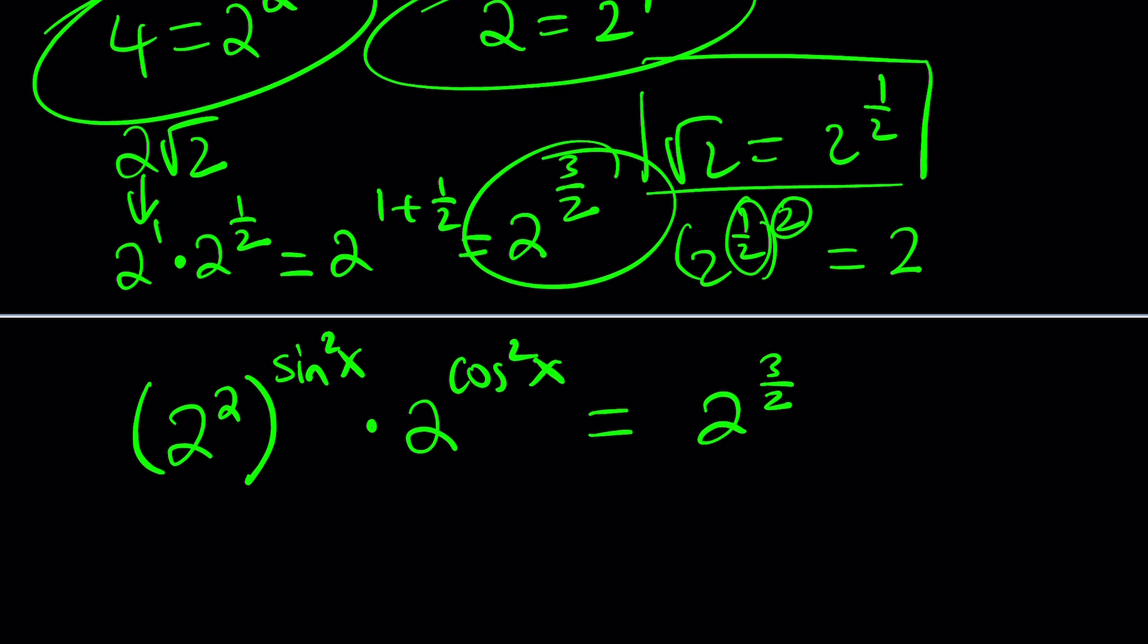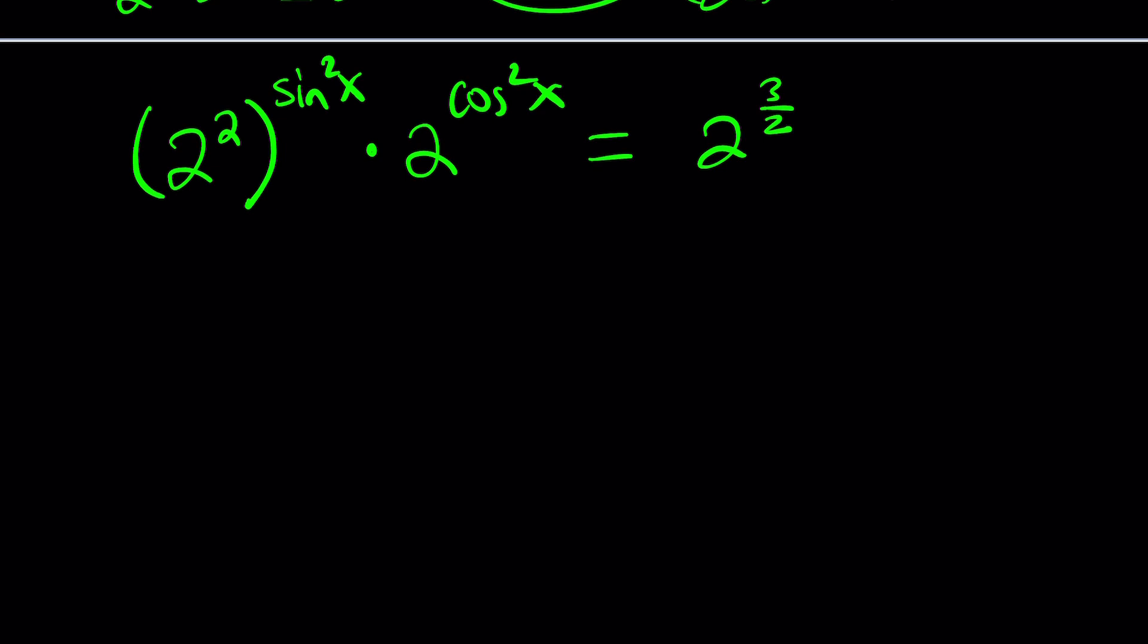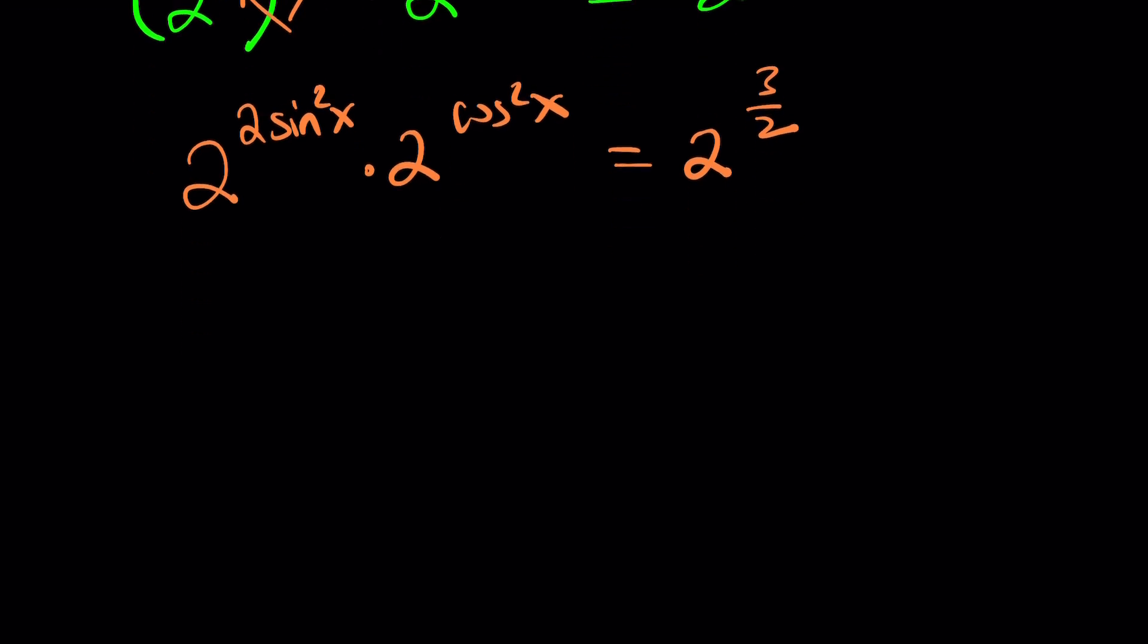So where do we go from here? Once you get the 2s, now we can go ahead and put them together, but first, apply the properties. Properties of exponents are very important. We're going to multiply these two things. That's going to give us 2 to the power 2 sine squared of x multiplied by 2 to the power cosine squared of x equals 2 to the power 3 halves. Let's not skip any steps so that everybody has a good understanding. Now we have the same base, so we can go ahead and add the exponents. 2 to the power 2 sine squared of x plus cosine squared of x equals 2 to the power 3 halves.